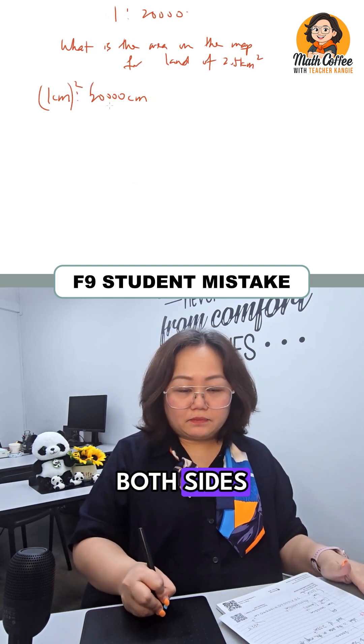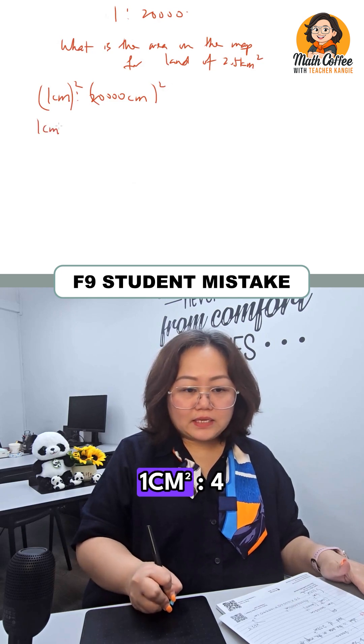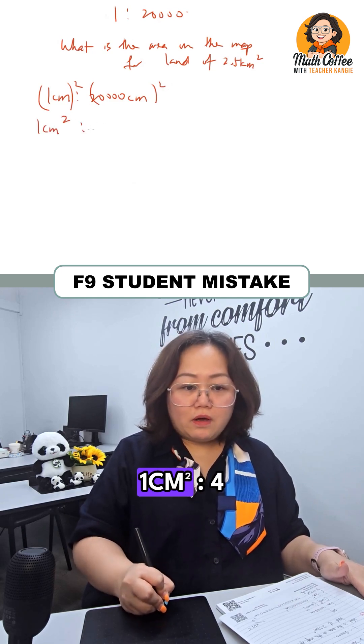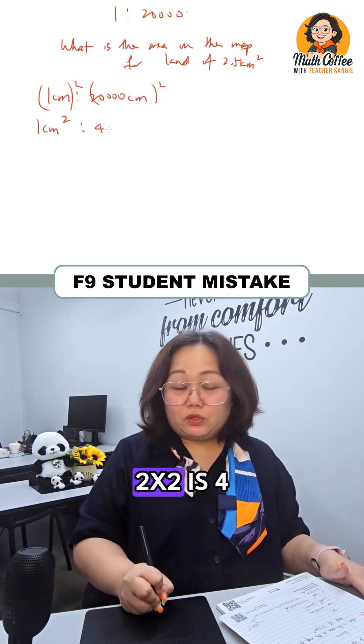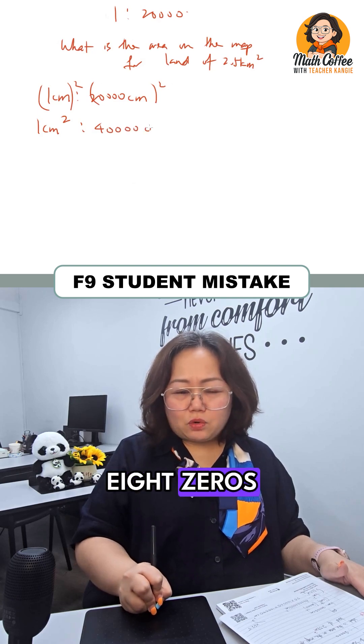They're going to square both sides. And they will have 1 cm squared and they will do 4. 2 times 2 is 4 and then they will have 8 zeros over here.